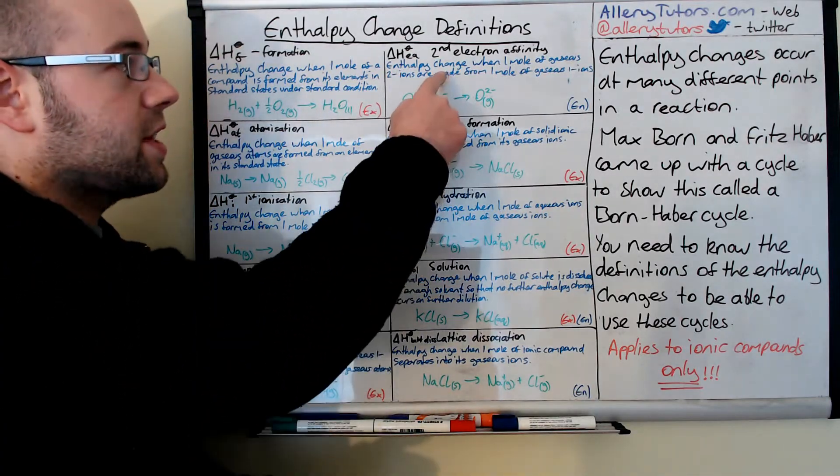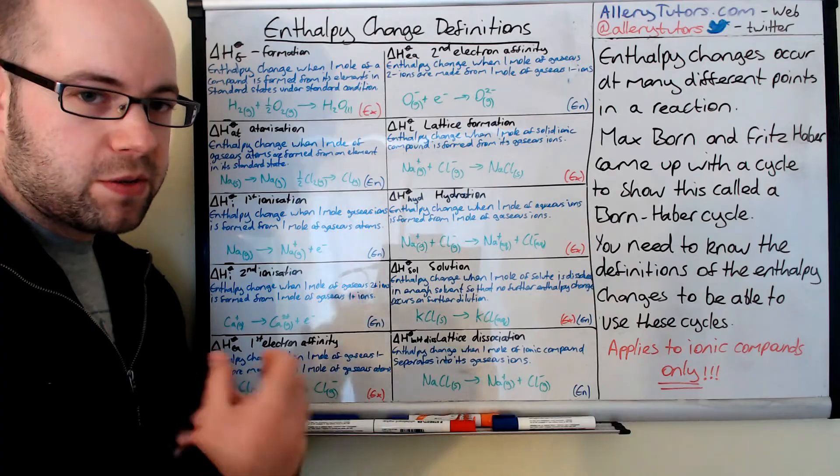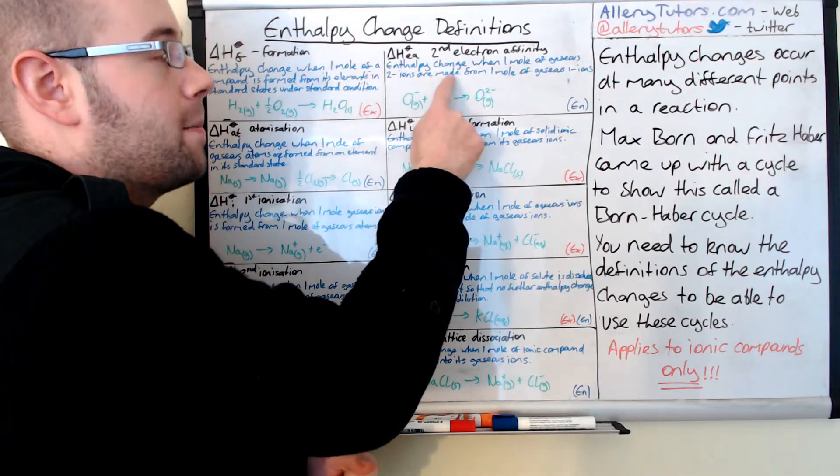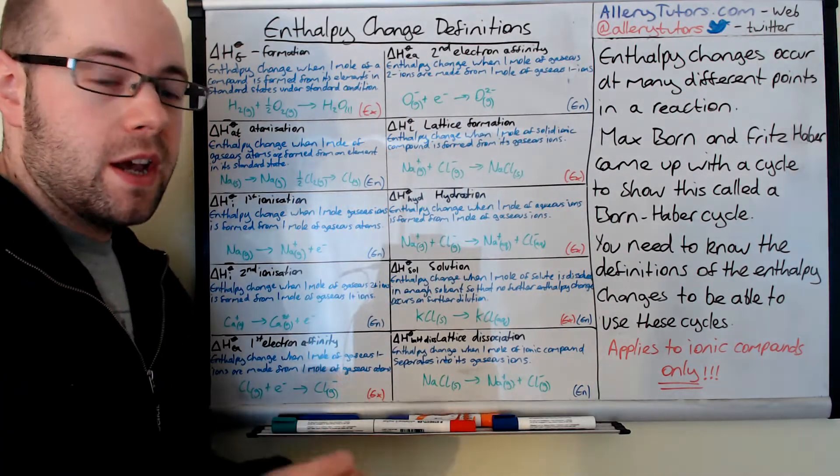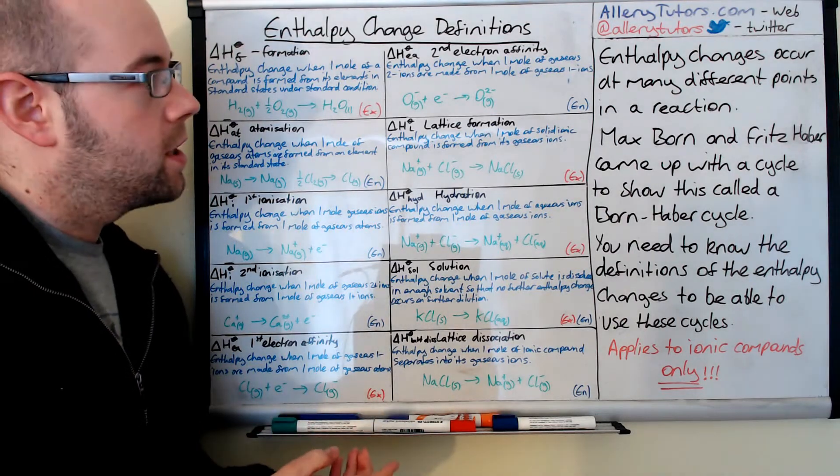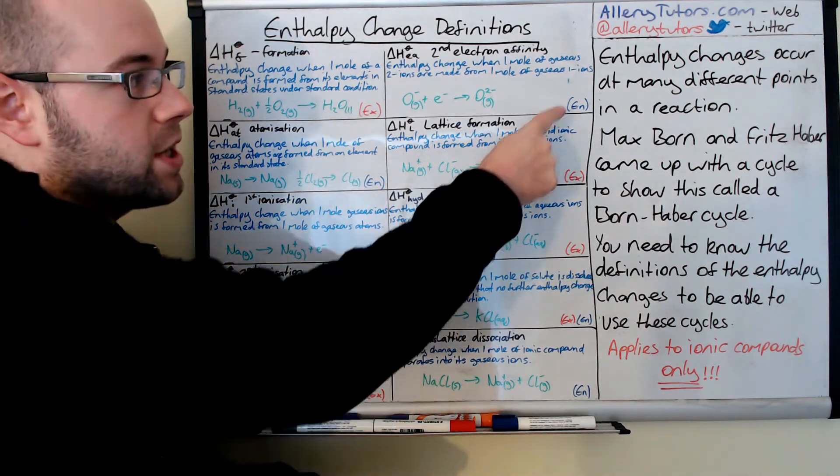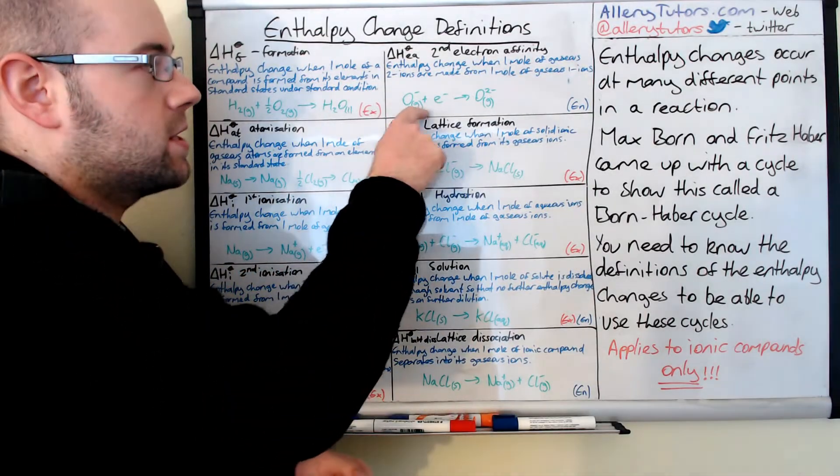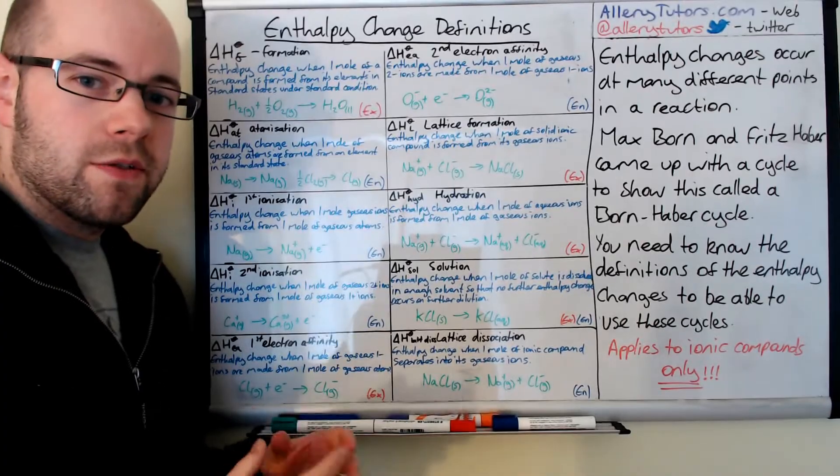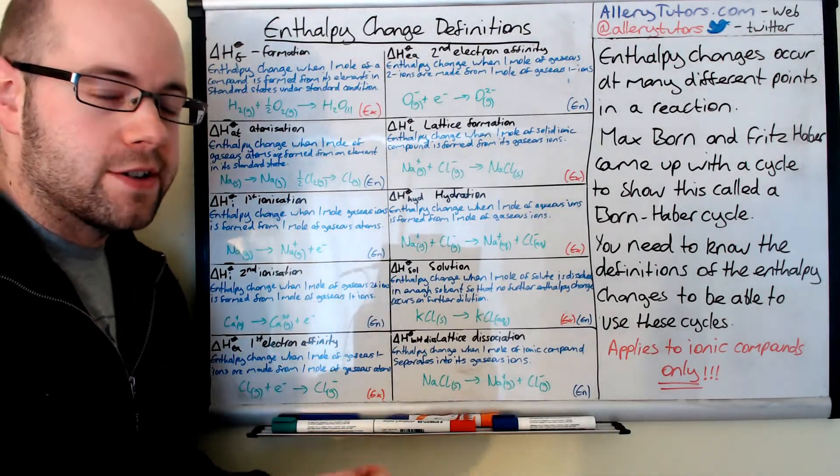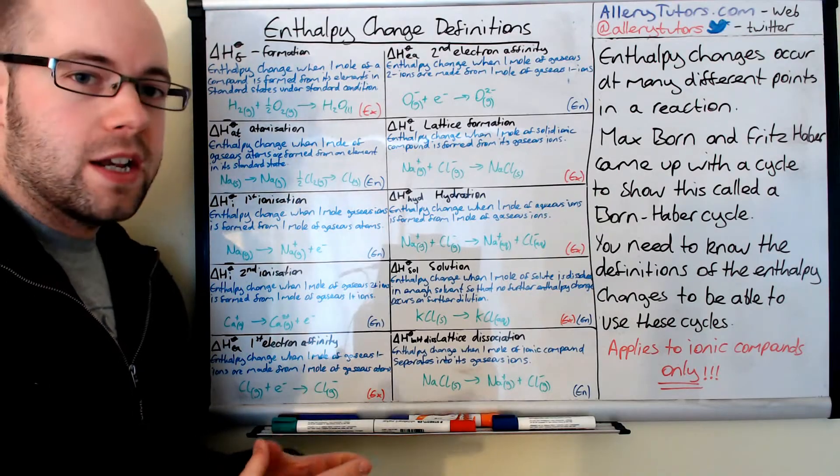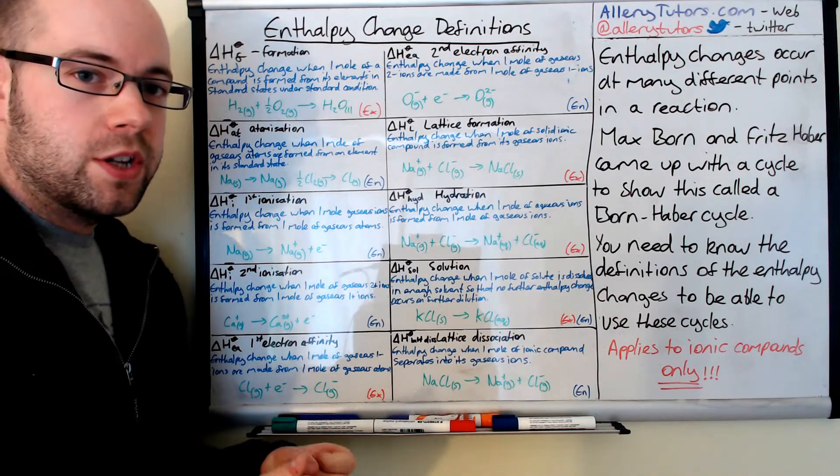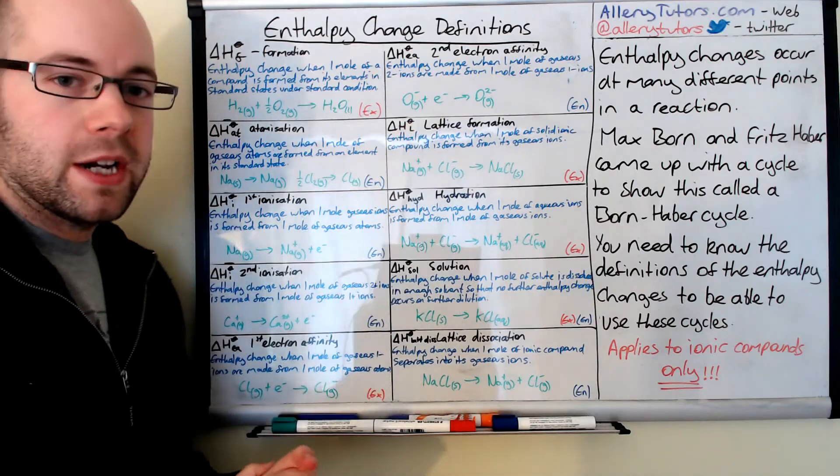The second electron affinity is really different, and you've got to be careful with this, especially when drawing Born-Haber cycles. This is the enthalpy change when one mole of gaseous two minus ions are made from one mole of gaseous one minus ions. Very similar to the first except we're forming two minus. The only difference is that this one's actually endothermic. For example, O minus in the gaseous state plus an electron forms O2 minus. The reason this is endothermic is because we're trying to affinitize a negative electron to a negative ion. You've got repulsion there, repulsive forces. You need to put energy in to overcome that to form your O2 minus gas.